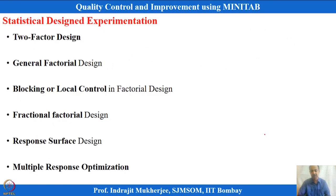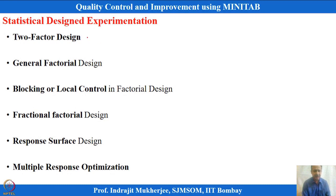If I go for all 8 possible combinations, that is design of experiments—factorial design. There are different types of statistical experimentation. Moving from one-factor experimentation (one-way ANOVA) to two-factor experimentation, we will try to understand this progression. The complexity increases as we go ahead with more than two factors. Two-factor experimentation is first, then general factorial design for more than two factors, and then blocking in factorial design—an important area also called local control in experimentation.